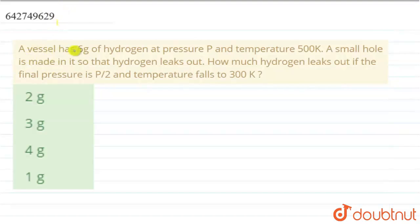The question is: A vessel has 6 grams of hydrogen at pressure P and temperature 500 Kelvin. A small hole is made in it so that hydrogen leaks out. How much hydrogen leaks out if the final pressure is P/2 and temperature falls to 300K? So there is a vessel which has 6 grams of hydrogen.